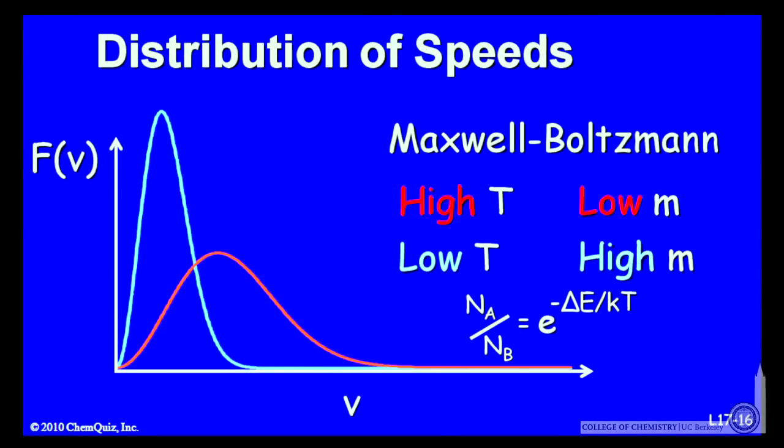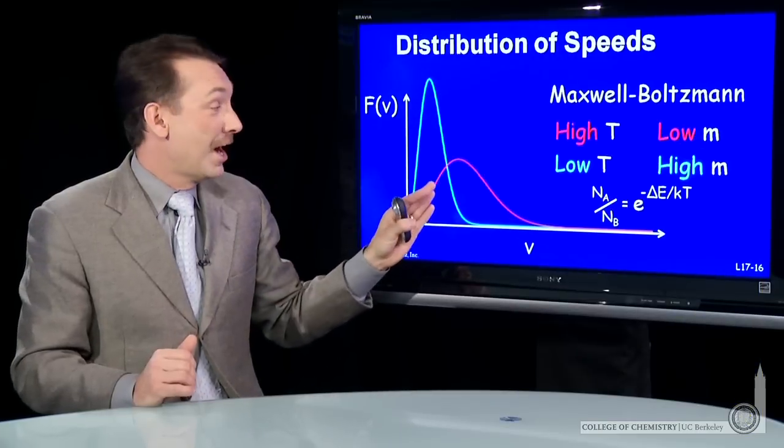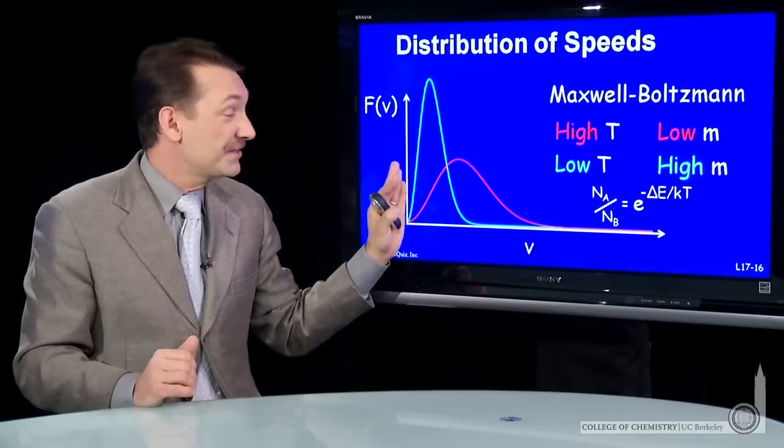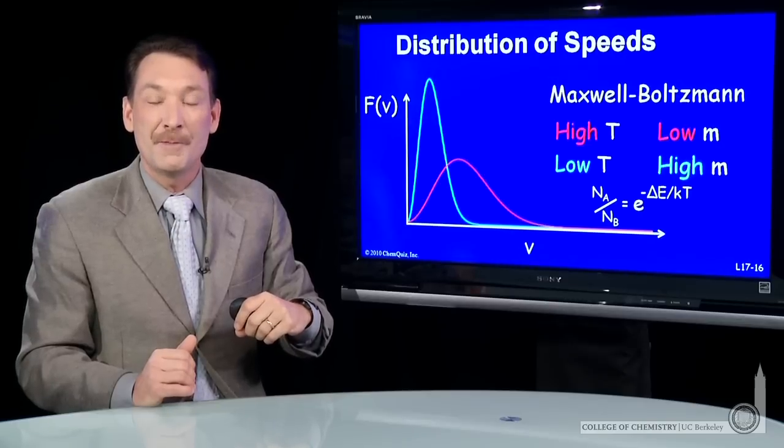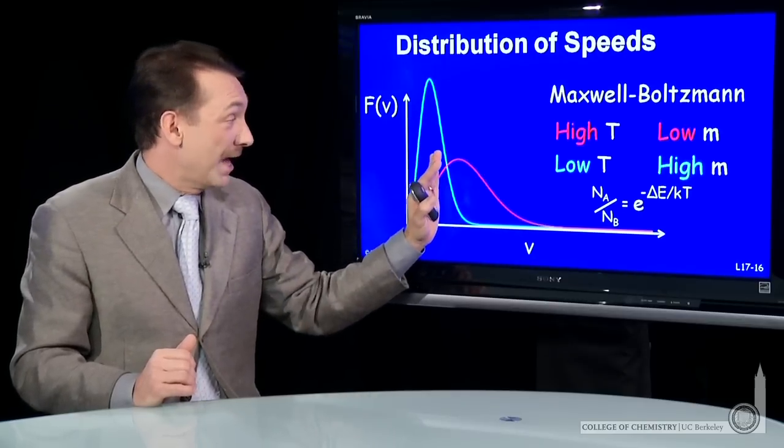Now let's look at a different sample. Same number of particles, but either at a higher temperature or a lower molar mass. We know higher temperature or lower molar mass would increase the mean squared velocity, that root mean squared velocity parameter. And that's what happens.